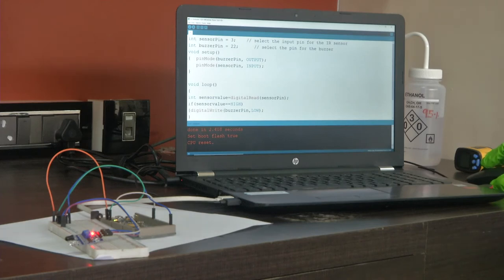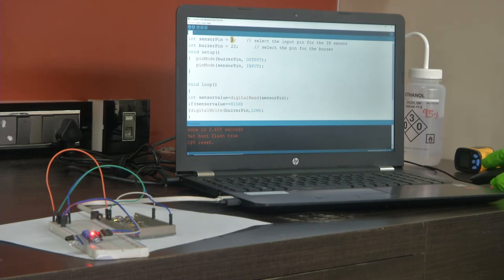So, in the Arduino code you can see that I have defined the sensor pin as 3, that means the digital output of the IR sensor have been connected to the pin number 3 and the buzzer is connected to pin number 22. And in the setup I have defined the buzzer pin as output, that means the buzzer is going to give an output that is the sound, beep sound and the sensor pin is the input and I have defined it because the sensor pin is connected to a digital input pin, that is pin number 3.